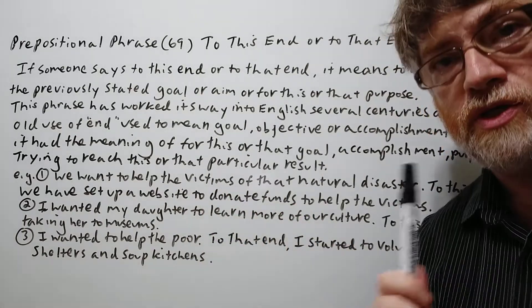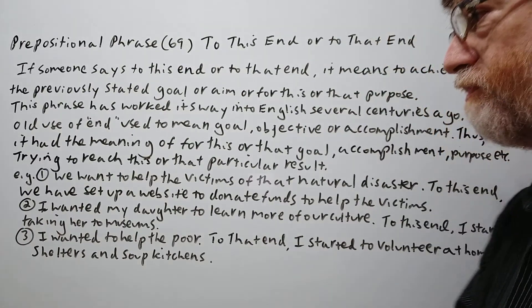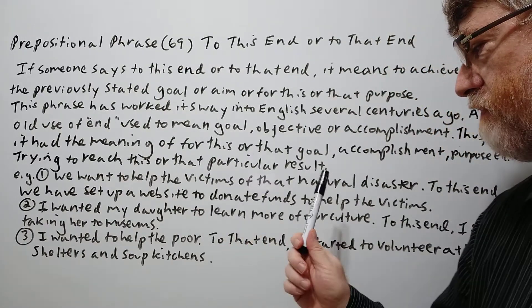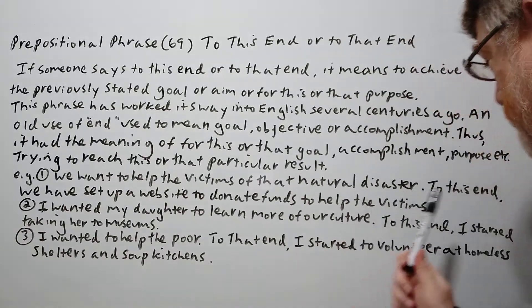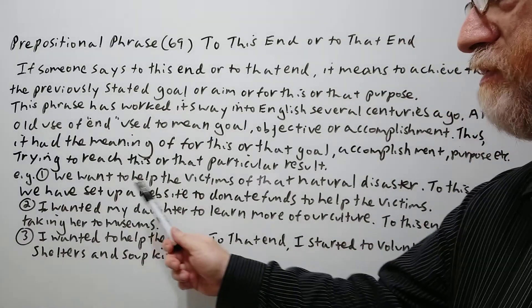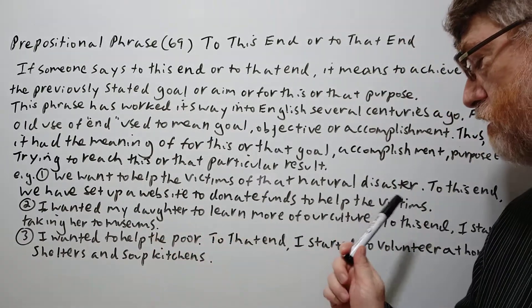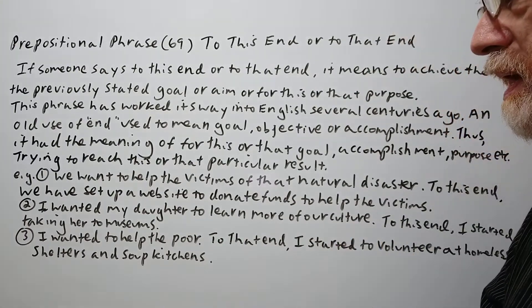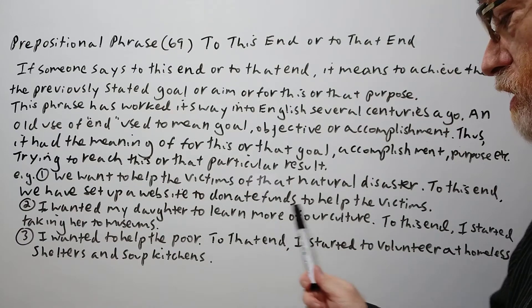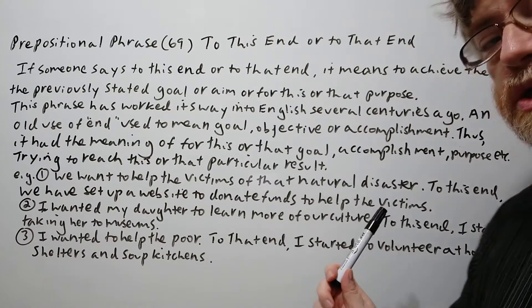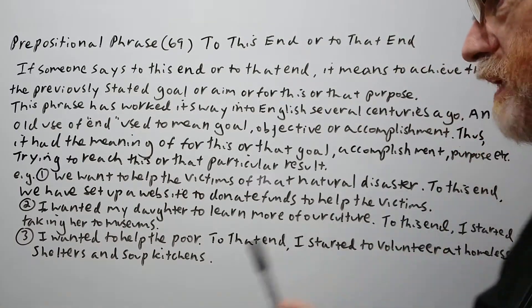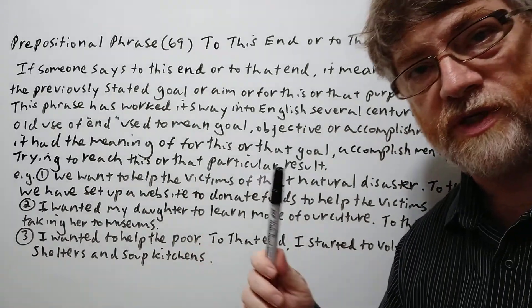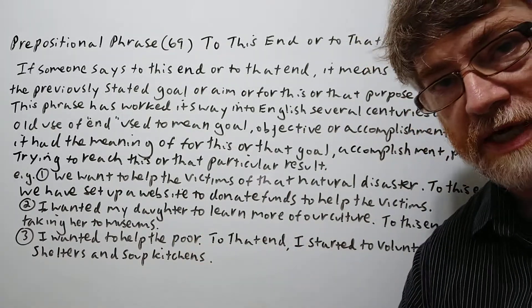We have three examples to show just the way we use it. Number one: 'We want to help the victims of that natural disaster. To this end, we have set up a website to donate funds to help the victims.' Number two: 'I wanted my daughter to learn more of our culture. To this end, I started taking her to museums.' So, for this purpose, for this goal, for this objective.